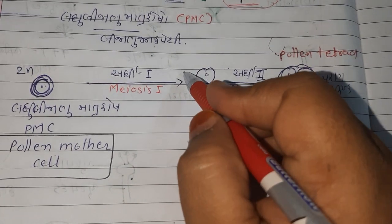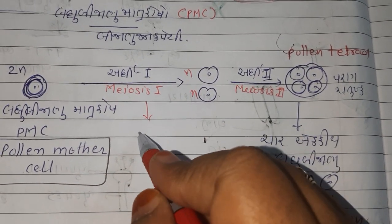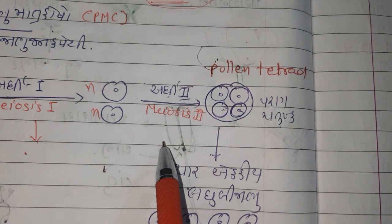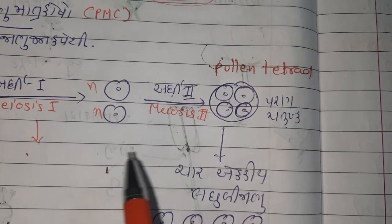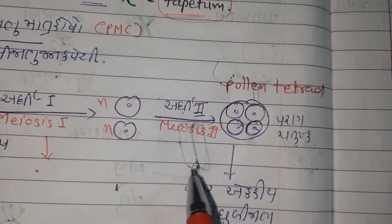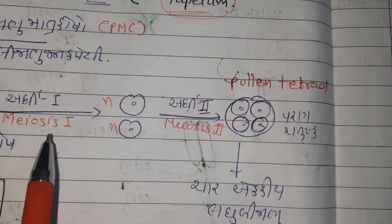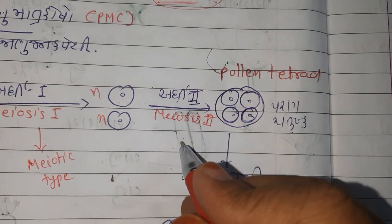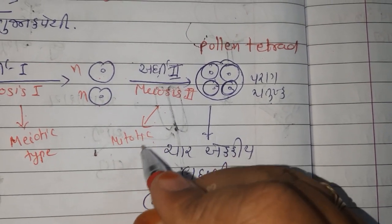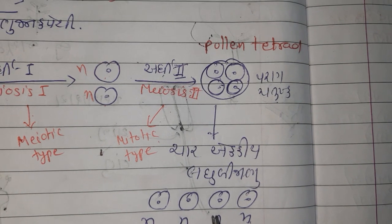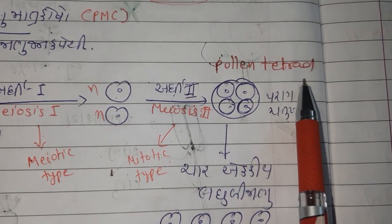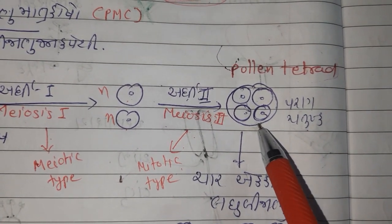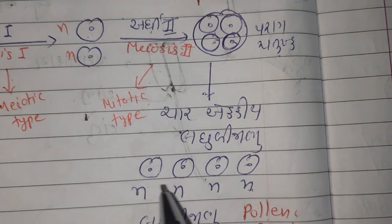How do these pollen mother cells undergo meiosis? They form two cells. Obviously they are haploid because we know that meiosis I is reductional division and meiosis II is equational division, which is mitotic type. So from pollen mother cell, due to meiosis I, two cells are formed. Due to second meiotic division, which is mitotic type, four pollen grains are produced which is known as a pollen tetrad. Tetra means four. They are present in group of four, that's why they are known as a pollen tetrad.